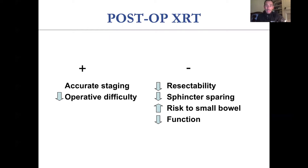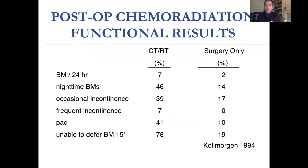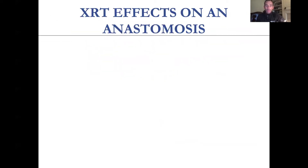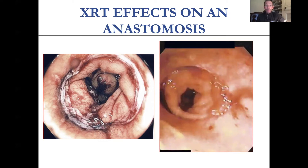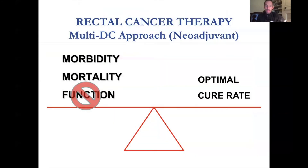Post-operative radiation therapy is really not something we use a whole lot of. On the positive side, you now know what you're dealing with — if they do have lymph node positivity, you can have accurate staging, and it can decrease operative difficulty because you're not operating in a radiated field. But it can cause functional problems and problems with your anastomosis. Chemoradiation therapy and post-operative functioning can lead to worse function, and you don't want to radiate that anastomosis. You can have chronic stricturing or non-healing wounds leading to chronic sinuses.